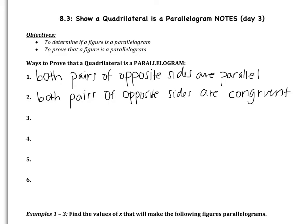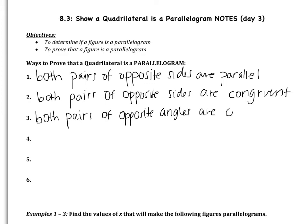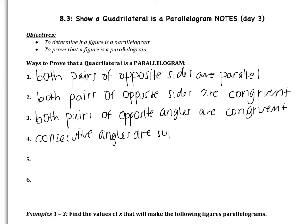Besides opposite sides being congruent, we also know that opposite angles are congruent. Along with that, the consecutive angles — the ones next to each other — are supplementary. There are two more properties we should know. There's also an important property of the diagonals of a parallelogram: the diagonals bisect each other.